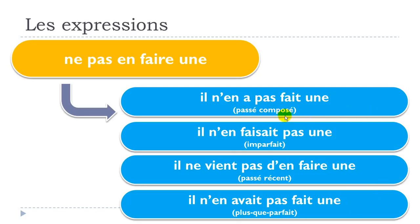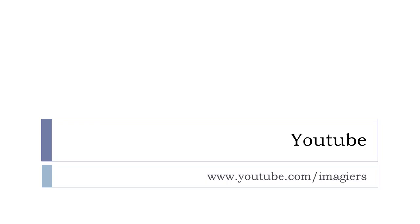One more time — passé composé: il n'en a pas fait une. Imparfait: il n'en faisait pas une. Passé récent: il ne vient pas d'en faire une. Plus-que-parfait: il n'en avait pas fait une. Et voilà, merci, au revoir et à bientôt.